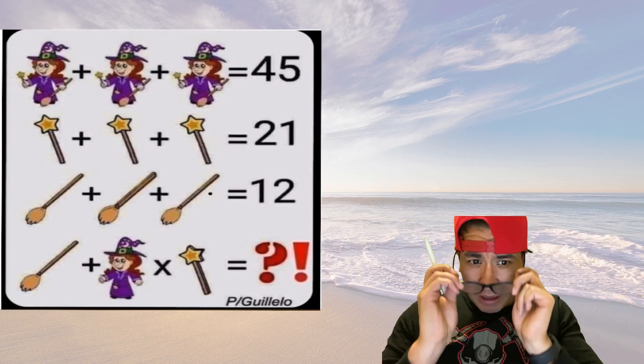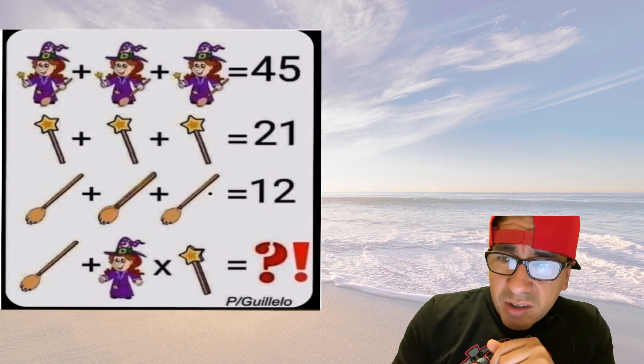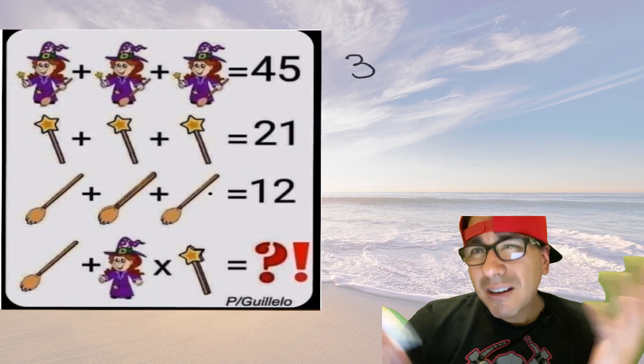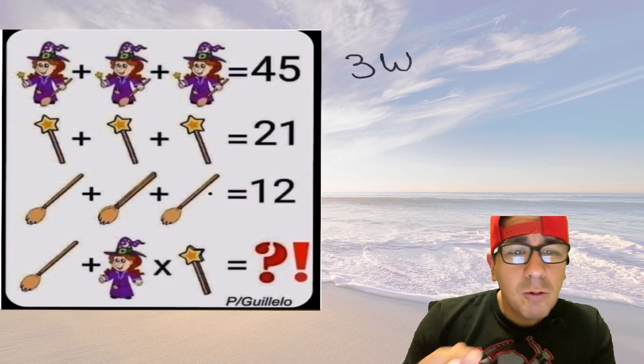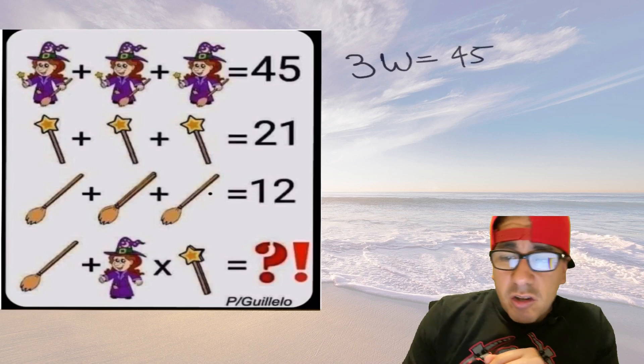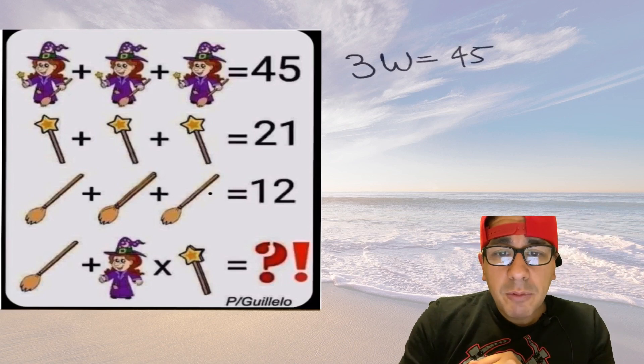I saw three witches so I was like alright I see what we're doing here. Instead of writing witches let's just put a W. So we have three witches and it equals 45. If you want to use algebra you can divide both sides by three.